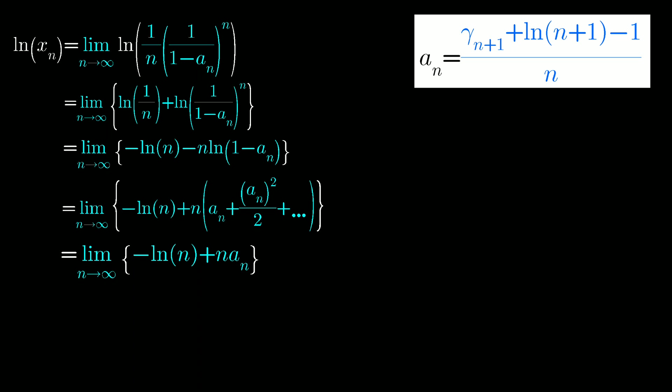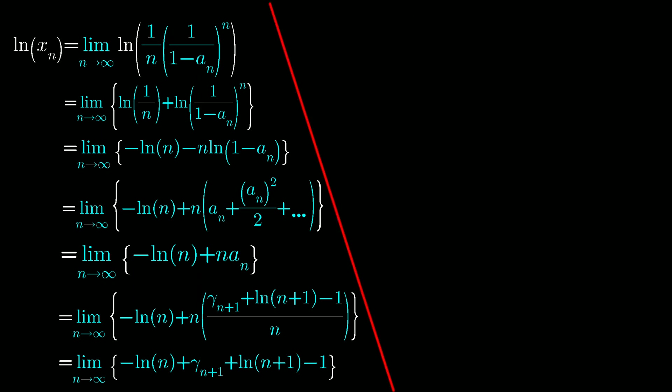Now put the value of an. Here, open the gamma n plus 1 and cancel out ln of n plus 1 term.